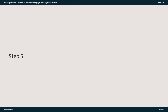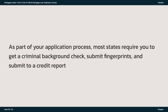Step 5: Complete background checks and pay all fees. As part of your application process, most states require you to get a criminal background check, submit fingerprints, and submit to a credit report.